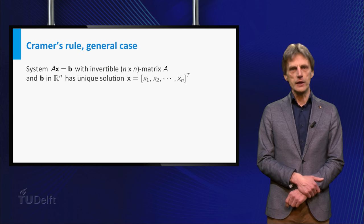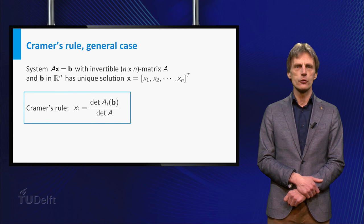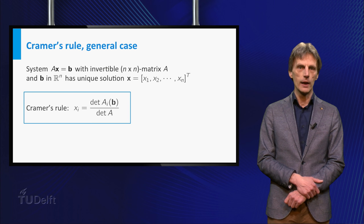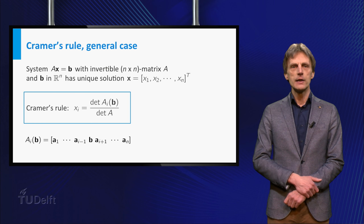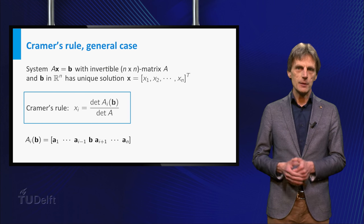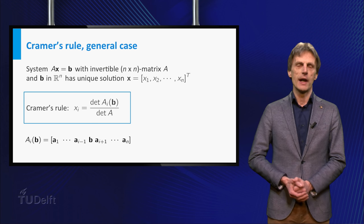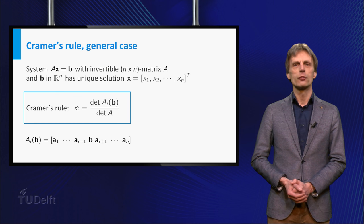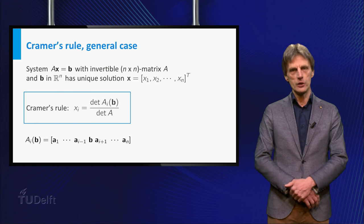Now Cramer's rule states that xi is equal to the determinant of Ai(b) divided by the determinant of A where Ai(b) is defined as the matrix which is obtained from the matrix A by replacing the i-th column of A by the vector b. A proof of this formula for xi can be found in your book.